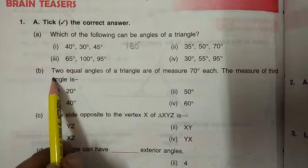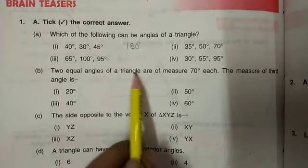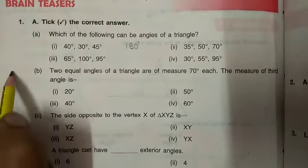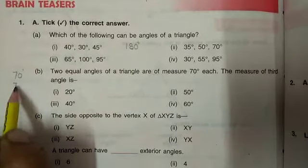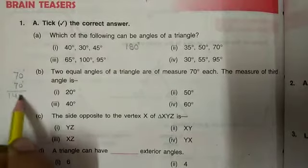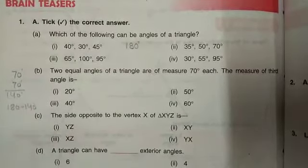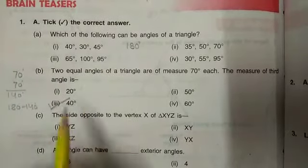Part number B: Two equal angles of a triangle are of measure 70 degrees. What should be the measure of third angle? Two equal angles are 70 each means the sum is 140. Third angle should be equal to 180 minus 140 that is equal to 40.